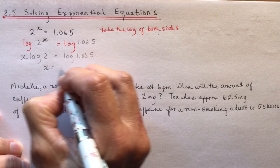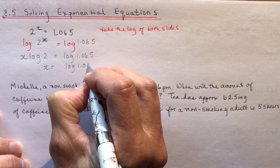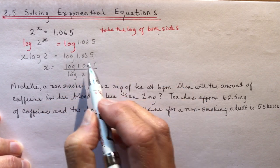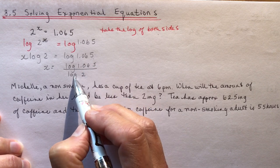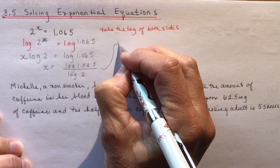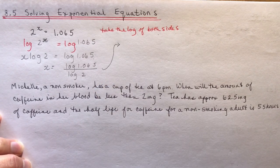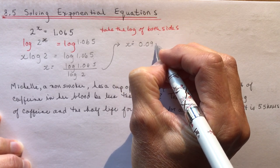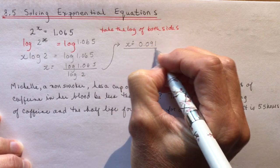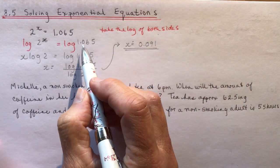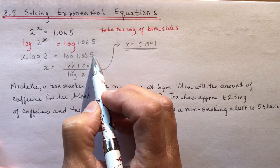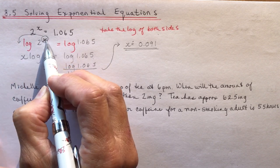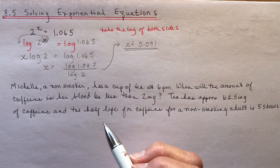All you have to do is say x equals log of 1.065 divided by log of 2. Note: that's not the same as log of (1.065 divided by 2) — it has to be log of 2 or you'll get the wrong answer. Do that on a calculator and you'll get x is approximately equal to 0.091. Once you have something written as a log of a number, you can evaluate it. You just need to know the rule of moving the exponent to the front of the logarithm.